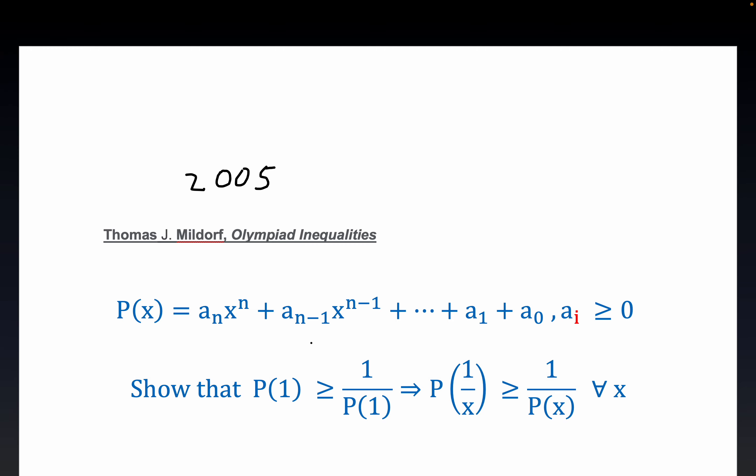What we're dealing with today is we're trying to prove something about a polynomial and inequality, namely that P evaluated at 1 over x is greater than or equal to 1 over P of x under these initial conditions. The coefficients of the polynomial are non-negative. That's what this means right here. In English you would just say the coefficients were non-negative.